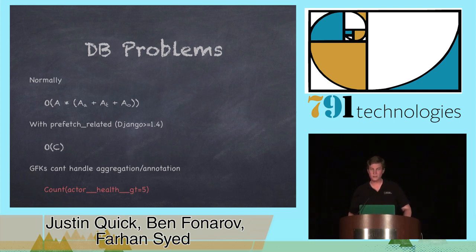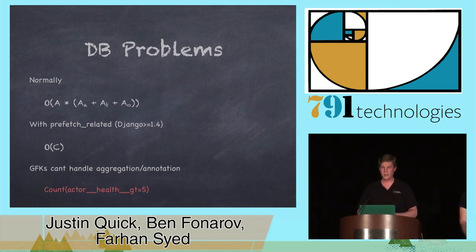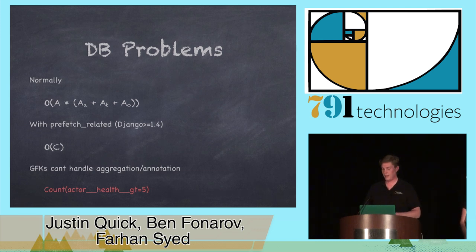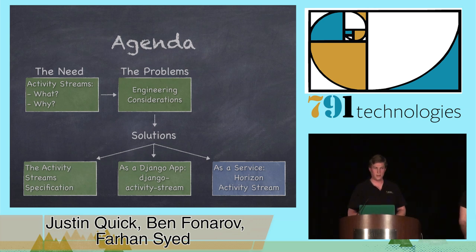Since we're dealing with generic foreign keys, there are some limitations. The aggregation and annotation API of Django will not work for generic foreign keys. Trying to find a count of actors whose health is greater than 5 just will not work. Unfortunately, this leaves out a lot of interesting things like recommended content or most popular — a lot of the more interesting queries fall short, and you have to do a lot of ugly SQL. So there's a better way to do it, and that's what we've been using at National Geographic — we've been working on the Horizon service.